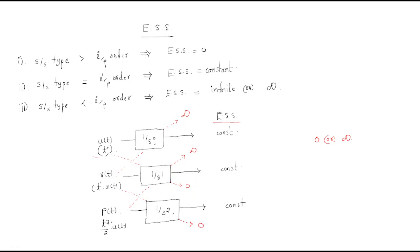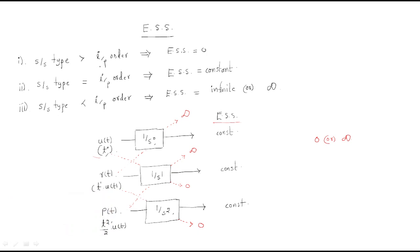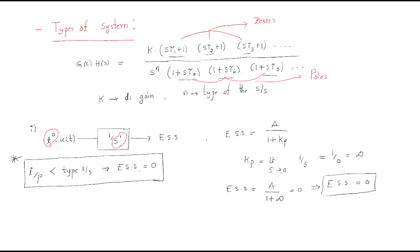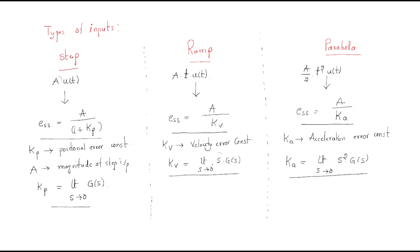When starting to solve a steady-state error problem, first look at the system type, then look at the input order, compare both, and determine which type of steady-state error applies. If the error is 0 or infinite, apply directly. If the steady-state error is constant, use the formulas: for step input, ess equals A by (1 plus kp); for ramp signal, steady-state error is A by kv, where kv equals limit s tends to 0 of s into G(s).